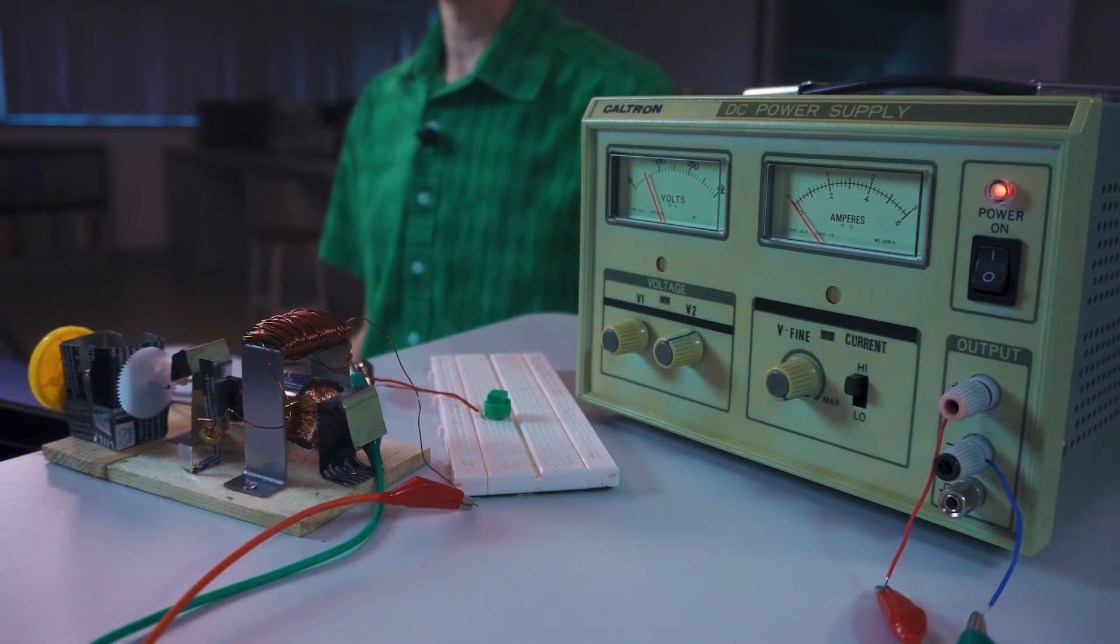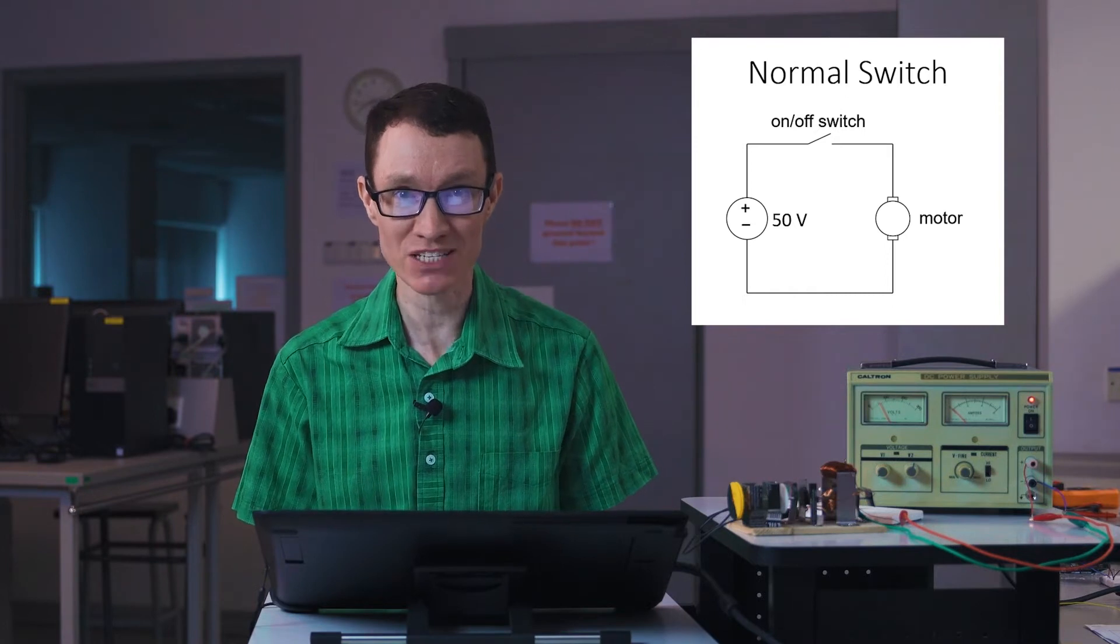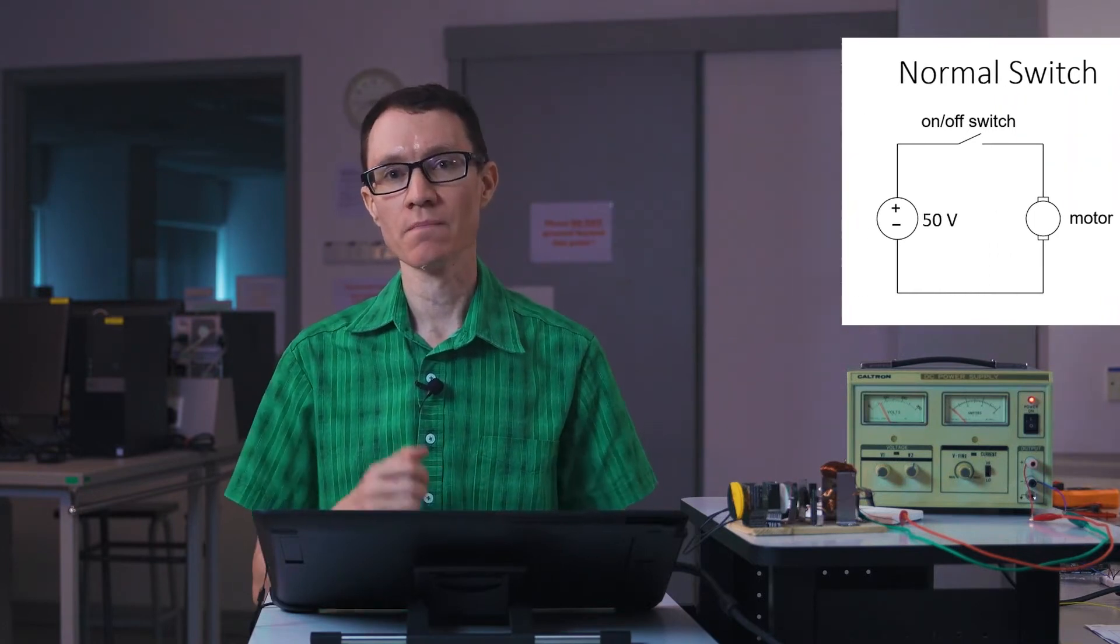all of the current that the motor was using when it was running was passing through the switch. Now for a small motor like this, it may not make much of a difference, but for large motors, you could have a lot of current, dangerous amounts of current passing through a switch. You might not always need to use a really large switch. Sometimes you might want to use a small switch.